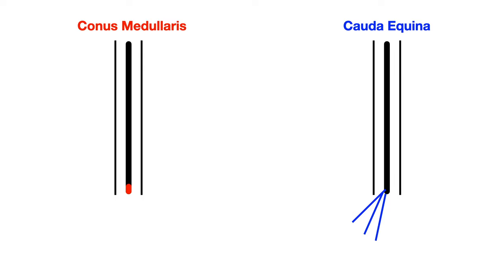So now that we understand the anatomical difference — conus medullaris being the end of the spinal cord, cauda equina being nerves in a group that hang off of the spinal cord — the difference in symptoms should make perfect sense. If we have a lesion that affects the conus medullaris, we're going to produce upper motor neuron signs because we're impacting the distal end of the spinal cord. The central nervous system is brain and spinal cord, so anything affecting spinal cord produces upper motor neuron signs, and that's going to be bilateral. Cauda equina, by contrast, produces lower motor neuron signs, and because it's on either side, it's going to be unilateral.